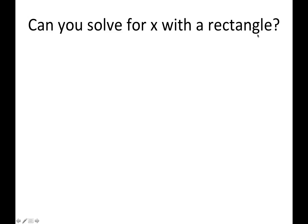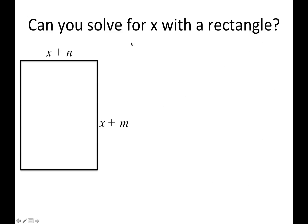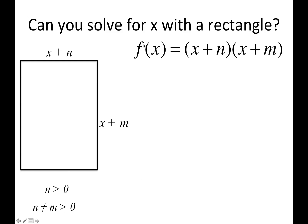But what if instead of a square we had a rectangle — say a rectangle with dimensions (x + n) by (x + m), where n > 0 and m > 0 but m ≠ n (because if they were equal you'd have a square)? The area function would be f(x) = (x + n)(x + m). The issue is it's really hard — actually impossible — to solve this unless you use completing the square.